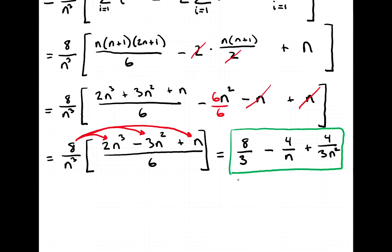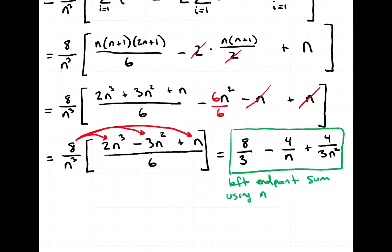So here is our expression, and what this is is the left endpoint sum using n rectangles: 8/3 − 4/n + 4/(3n²). This is the sum of all n rectangles if we're using left endpoints.